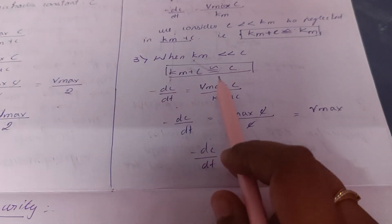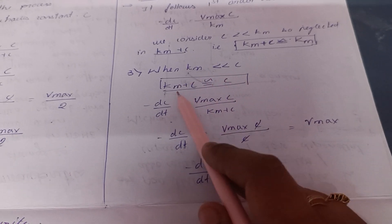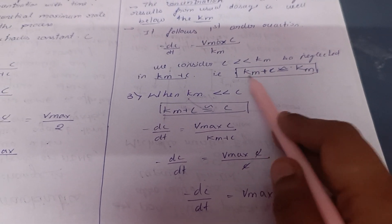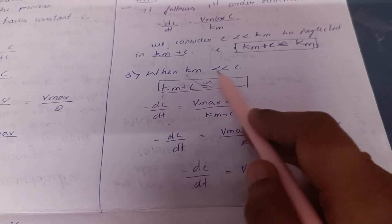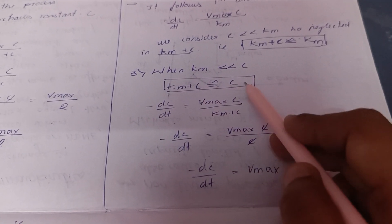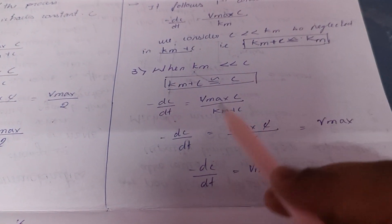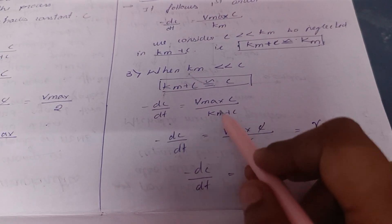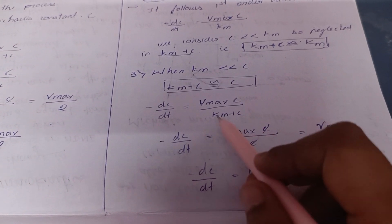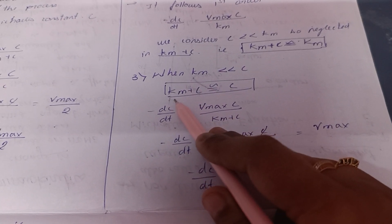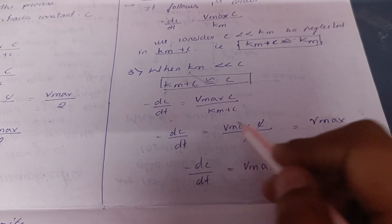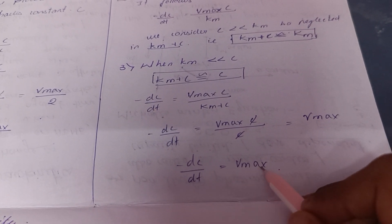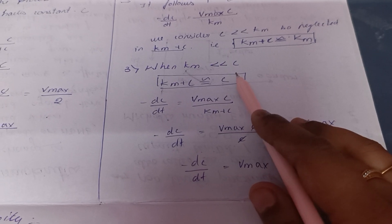Third condition: when Km is very very less than C, meaning concentration is high. So Km plus C is approximately equal to C. We exclude Km as it is a very small value, and we are left with concentration canceling. So the equation reduces to DC/DT = Vmax, which is a constant rate — zero order kinetics.